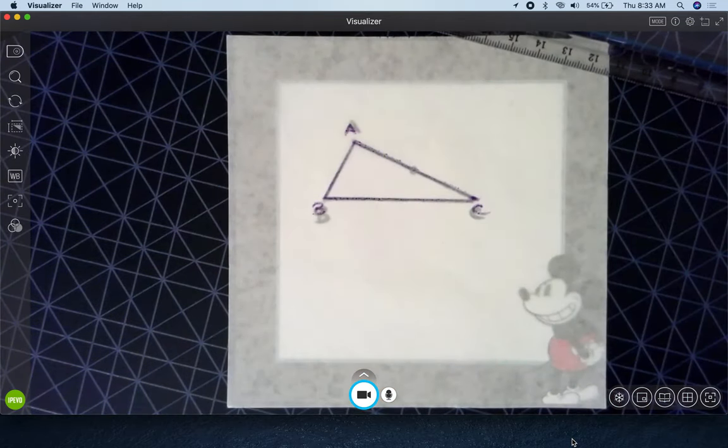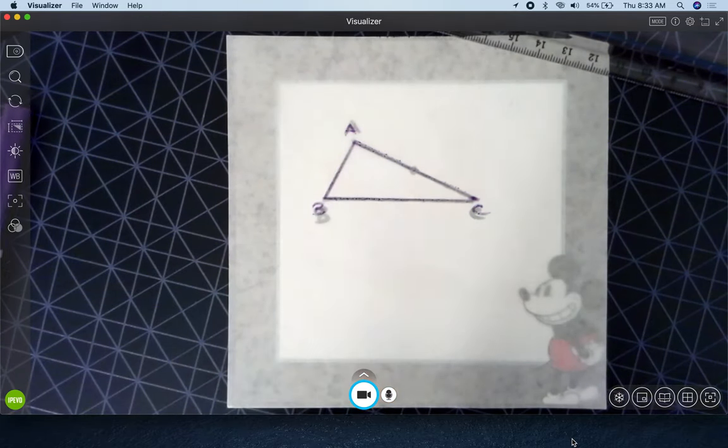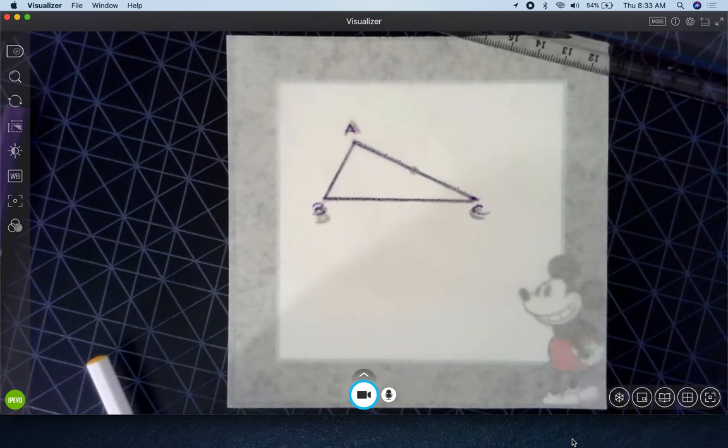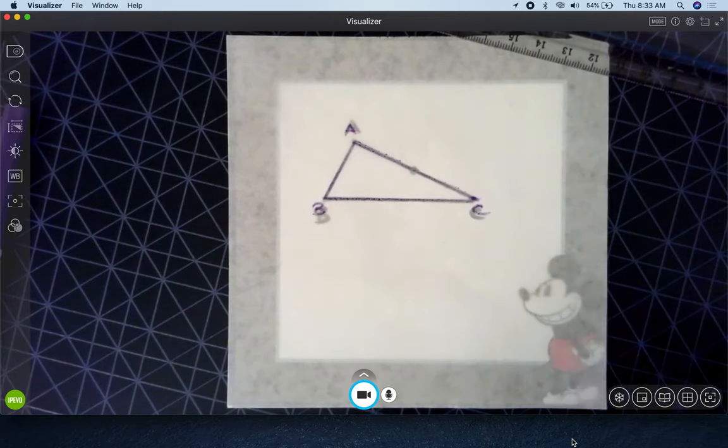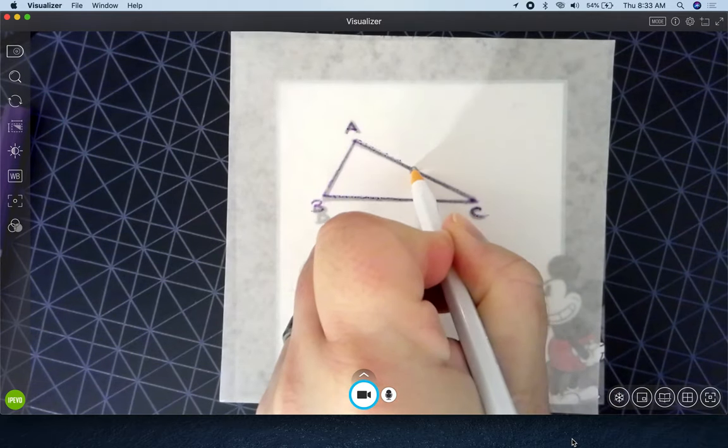Okay. And probably a permanent marker is better than the Crayola washables on patty paper because it tends to smear, but going okay. All right. So let's go ahead and pin down that point of rotation and let's go ahead and see what happens when I rotate.